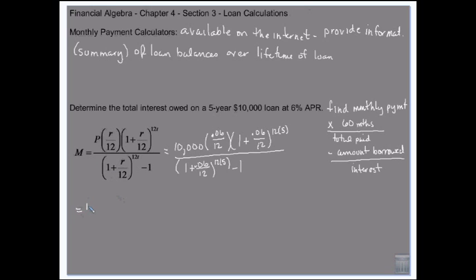That's going to give me 10,000 times 0.005, 1.005 to the 60th, over 1.005 to the 60th minus 1.